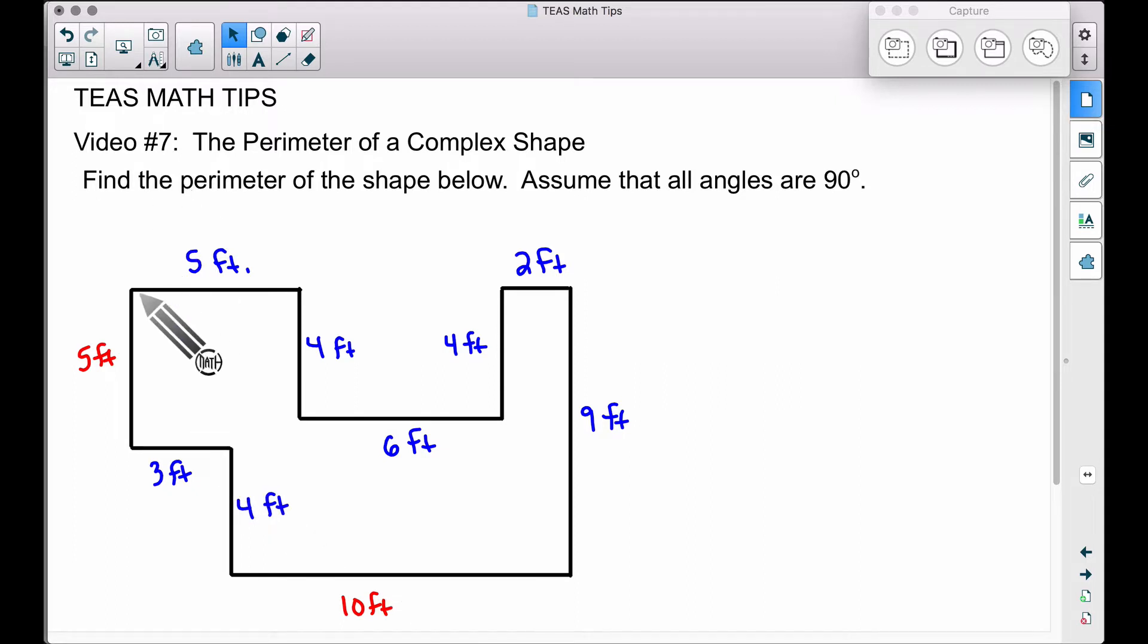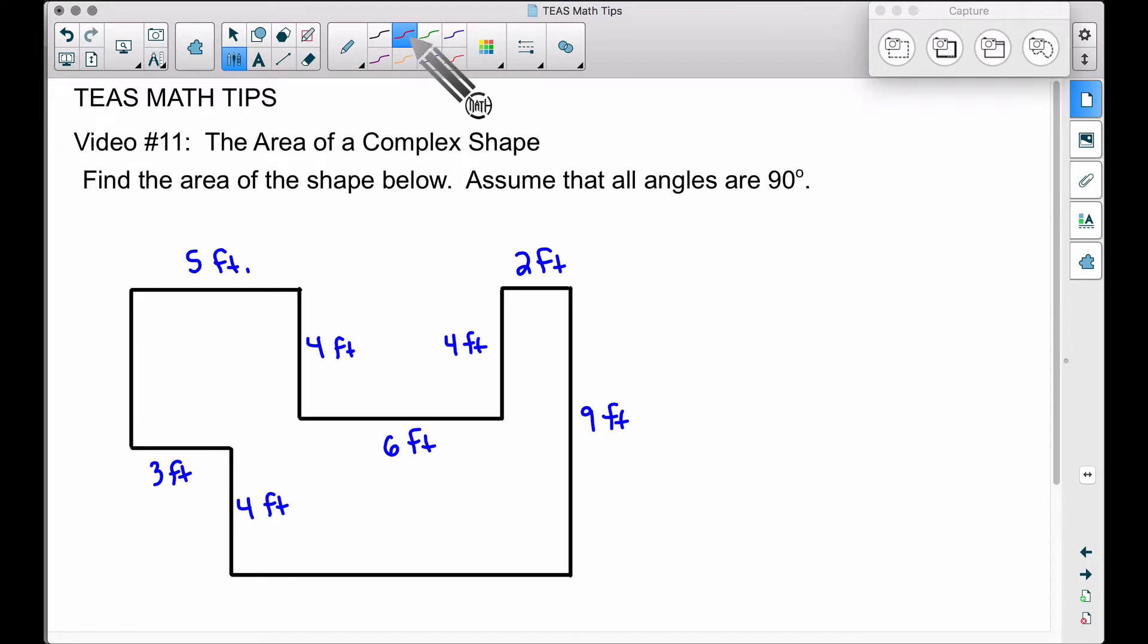That was important in video number seven because we wanted to find the perimeter of this shape, but they can be very helpful now as well since we want to find the area. So fast forwarding back now to video number 11, we have 5 feet over here and 10 feet over here. So let's find the area of this thing.